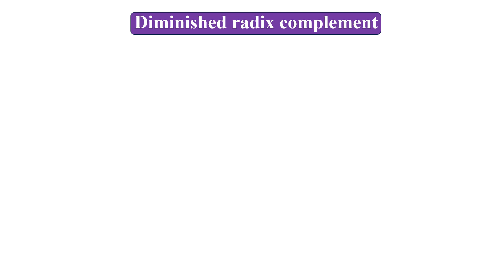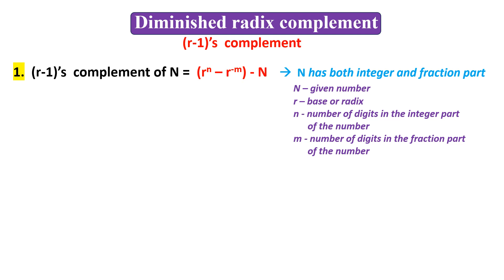Diminished radix complement is also called the R minus 1's complement. Now we are going to learn the formulas to find the R minus 1's complement of numbers in different number systems. The first formula to find the R minus 1's complement of a number N is: r to the power of n minus r to the power of negative m, minus N. This formula is used if the number N has both the integer and fraction part.